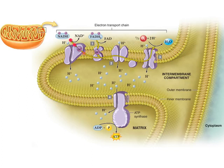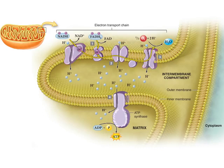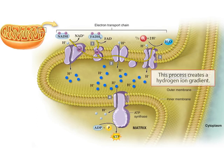So what happens with all the energy released by the electrons moving through the transport chain? Notice the hydrogen ions that are passing through the first, third, and fourth enzymes. These enzymes use the energy released by the electrons to actively pump hydrogen ions from the matrix to the intermembrane compartment. This process creates a hydrogen ion gradient, also called a proton gradient, meaning that the concentration of hydrogen ions in the intermembrane compartment is now higher than it is in the matrix.